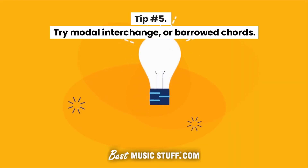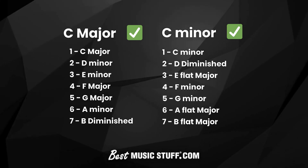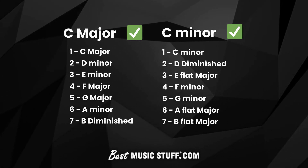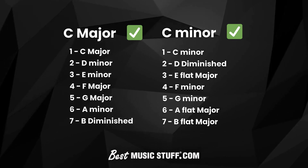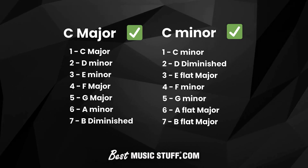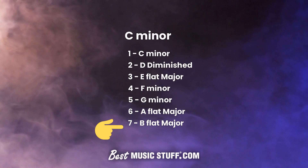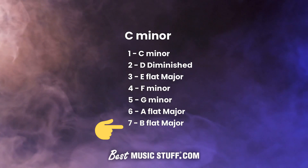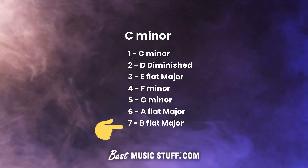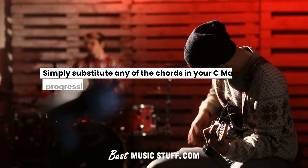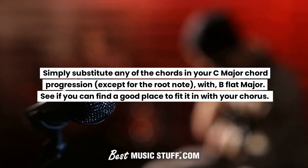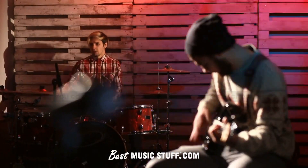Tip number 5: Try modal interchange, or borrowed chords. These are chords borrowed from the parallel minor key of the key you are already in. For the dog song, we only pulled notes from the C major chords. If we needed more options, we could pick any of the seven chords from the parallel C minor chords. For example, let's choose the B flat major chord — just one of the seven borrowed chords available. Listen to how B flat major adds color and contrast to your C major rooted chord progression. Simply substitute any of the chords in your C major chord progression, except for the root note, with B flat major. See if you can find a good place to fit it in with your chorus.